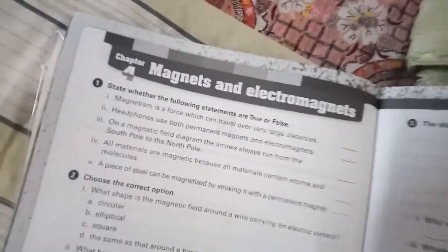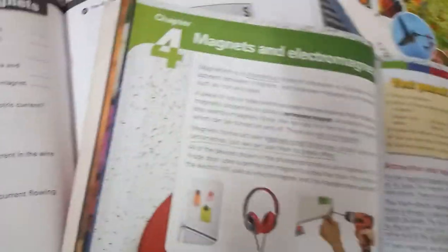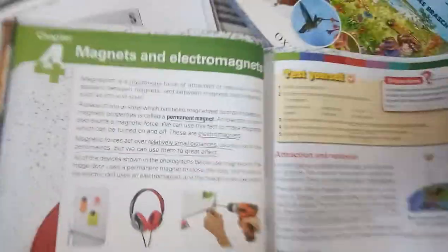Bismillahirrahmanirrahim. Class 7th, it's time to do chapter number 4, Magnets and Electromagnets, from the workbook. We have done last time this chapter from the textbook, Magnets and Electromagnets, and hope you have cleared much in this chapter.